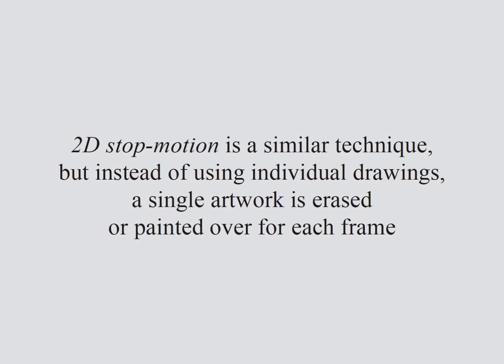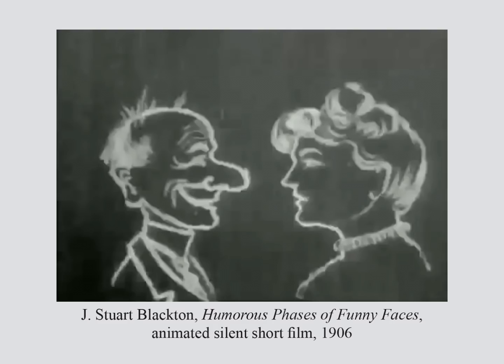2D stop motion is similar to a pencil test, except you don't have lots of drawings — you just have a single surface that you keep erasing and drawing over with each frame. This is an early example of 2D stop motion animation from 1906.